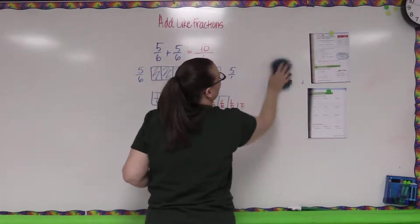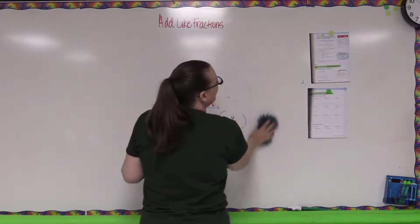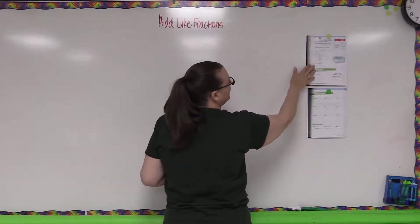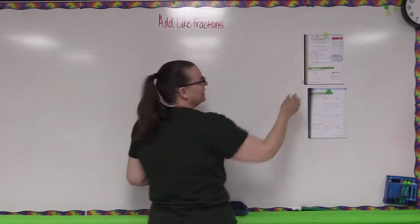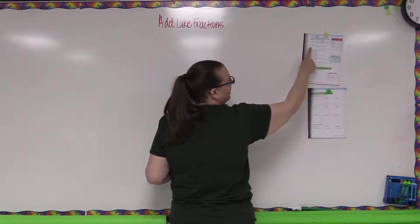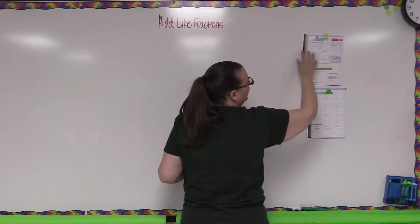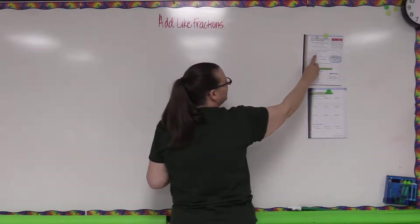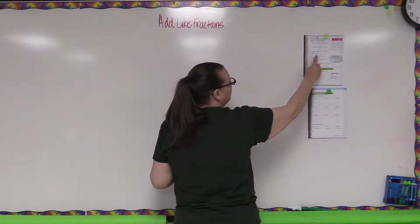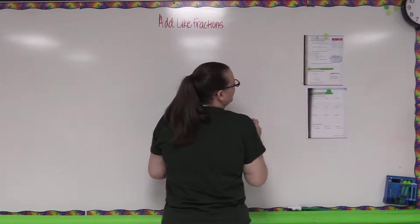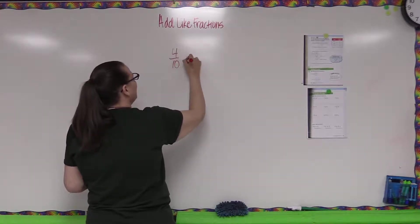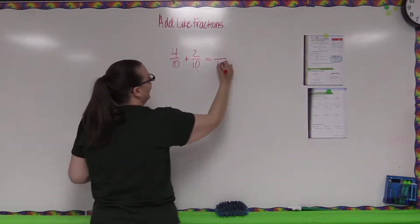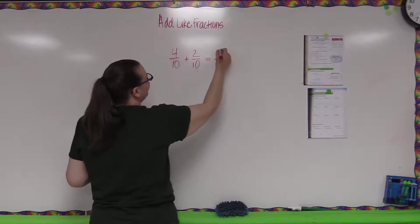Now we have a table with days and how much was read. On Tuesday, Teddy read four-tenths of a book. On Thursday he read two-tenths. To find how much he read altogether, we add four-tenths plus two-tenths. The denominator stays the same because we're measuring in tenths. Four plus two is six, giving us six-tenths.